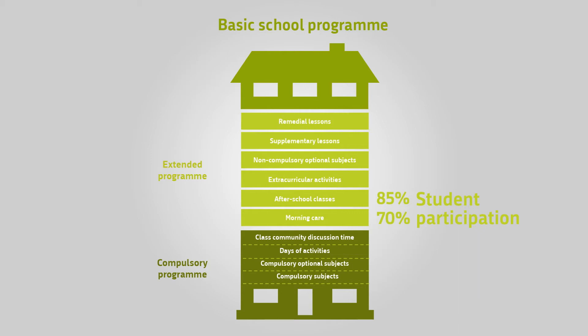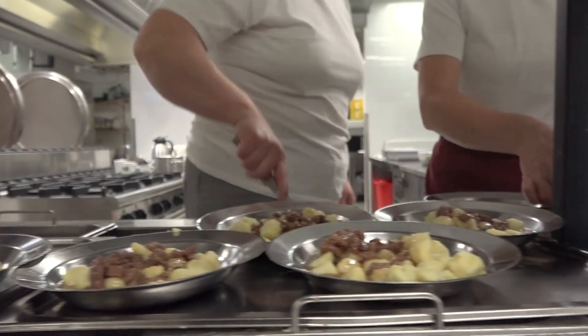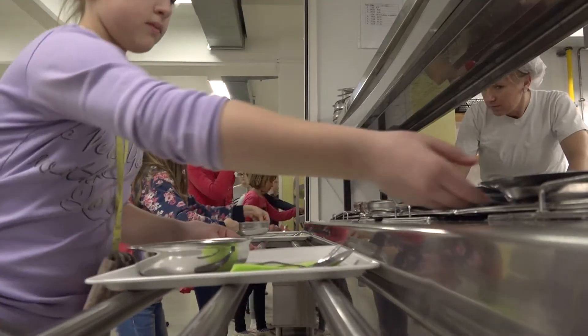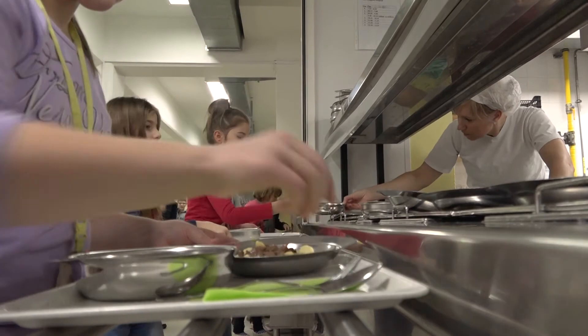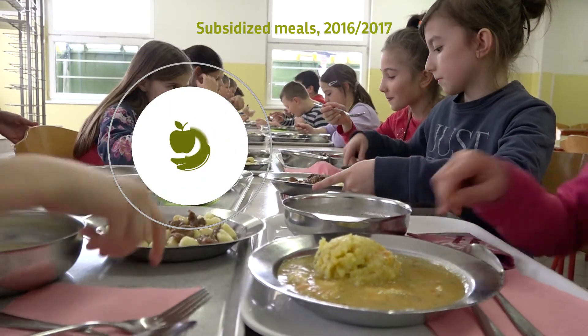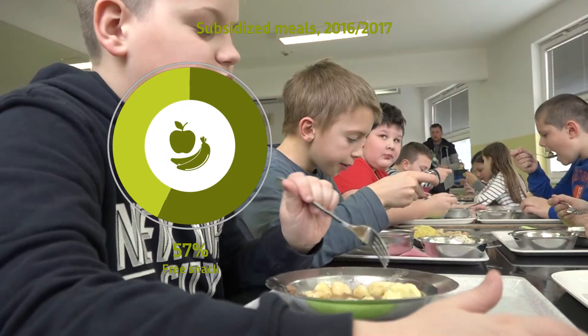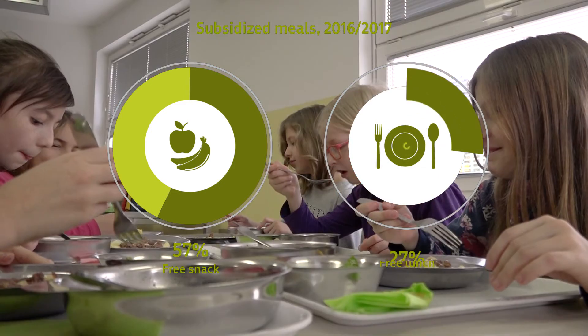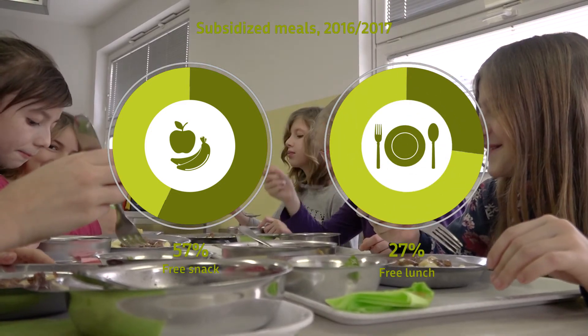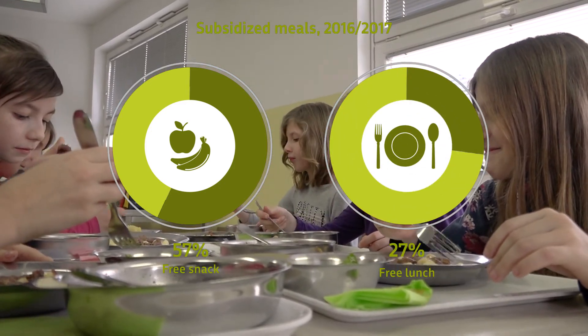Every school should have a library and a computer classroom, and must also offer meals to students. Basic schools are sensitive to the socio-economic status of students, allowing all students to rent textbooks from a school fund and offering free meals according to a family's income.